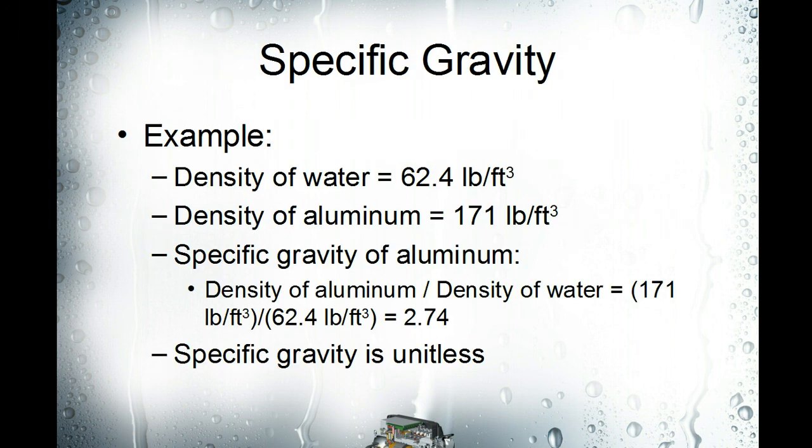Here's a quick example of specific gravity. Water is used as the standard, so this example gives you the specific gravity of aluminum. The density of water is 62.4 pounds per cubic foot, and the density of aluminum is 171 pounds per cubic foot. You divide the density of aluminum by the density of water and you end up with a specific gravity of 2.74. The specific gravity is unitless - it's not 2.74 pounds, inches, cubic feet, or so forth. It's just a way to compare different substances to see how they compare to each other as far as density and weight are concerned.